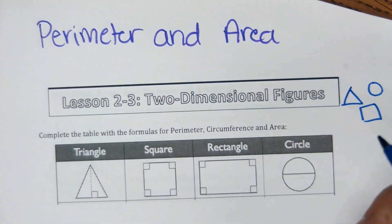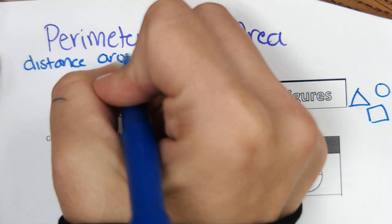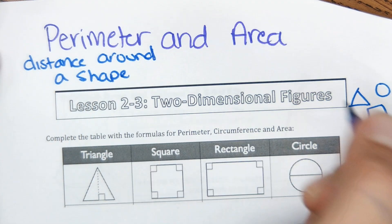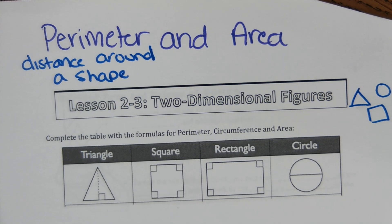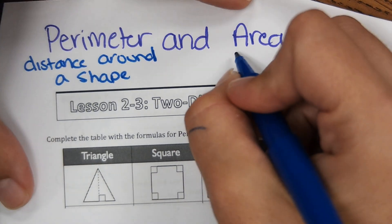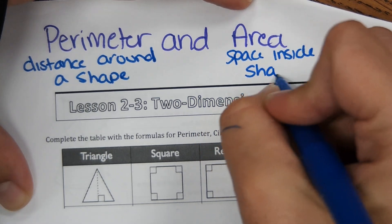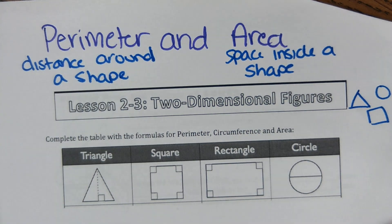Perimeter is the distance around a shape. So if you were fencing a yard, the fence would be the perimeter — the length of fence you would need. Area is the space inside of a shape. So if you were putting grass in your yard, the area would be the amount of square footage of grass that you would need.